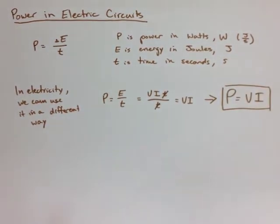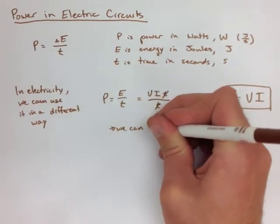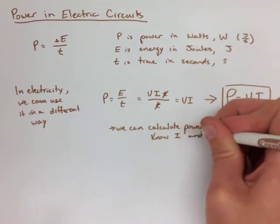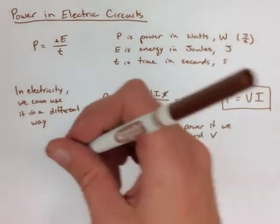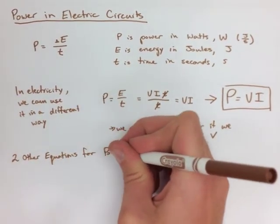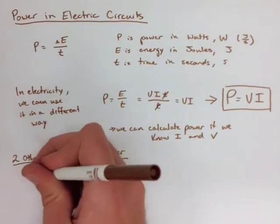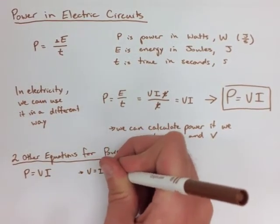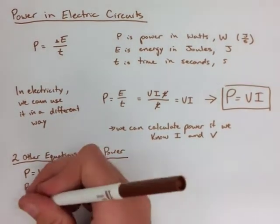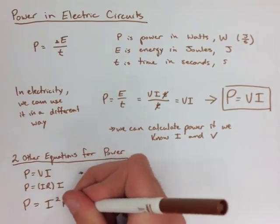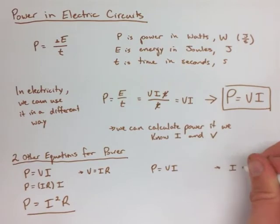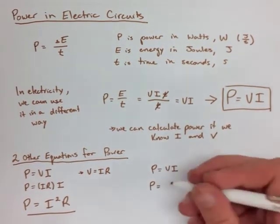From that equation, we can then use Ohm's Law to change this again. Ohm's Law stating that V equals I R will allow us to change power from P equals V I to P equals I squared R. The next equation, we're going to use a similar method by rearranging Ohm's Law to solve for I. We get I equals V over R, and then power equals V squared over R.